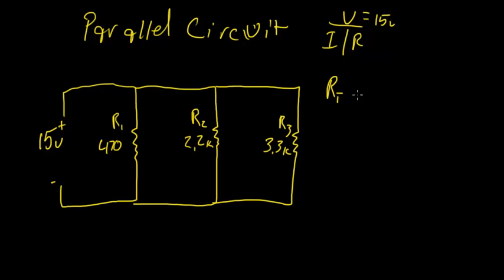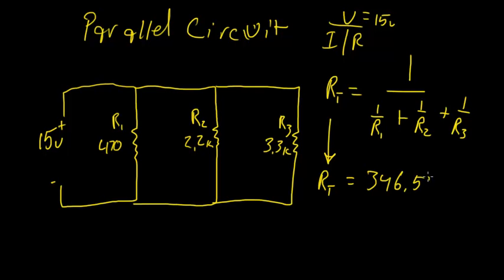So the total resistance in a parallel circuit is equal to 1 over 1 over R1 plus 1 over R2 plus 1 over R3. So in your calculator, you'd have to figure out what each one of these is, and then just add them all up. And what we end up getting, if we do that, so we have 1 over 470 plus 1 over 2.2k plus 1 over 3.3k, gives us a total for RT of 346.59 ohms. Now we have RT.